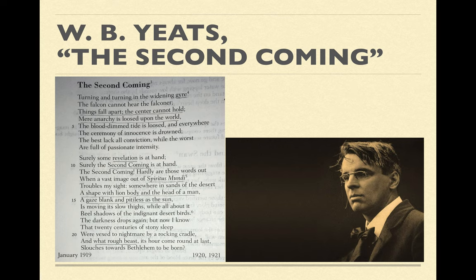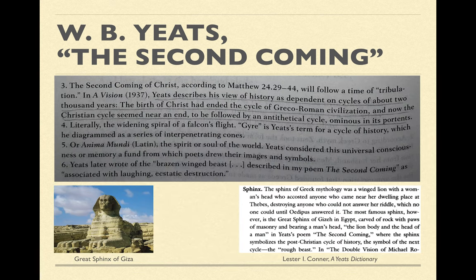I'm sure you've heard some of that before — 'Things fall apart, the center cannot hold,' 'What rough beast, its hour come round at last, slouches towards Bethlehem to be born.' But what a strange poem. What does it mean exactly? As you can see from the picture of the poem in your textbook, there's a bunch of footnotes. The first thing you have to do to understand the poem is read the footnotes. The title refers to a concept from Christianity: Jesus died, came back, ascended into heaven, and would return at the end of the age after a time of tribulation, heralding the Last Judgment.